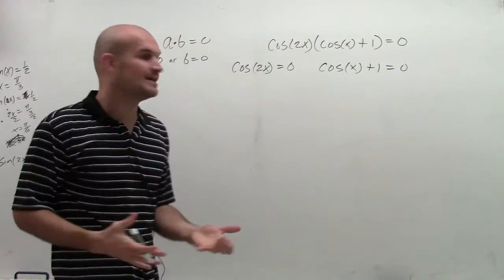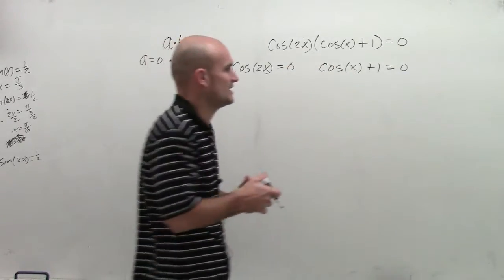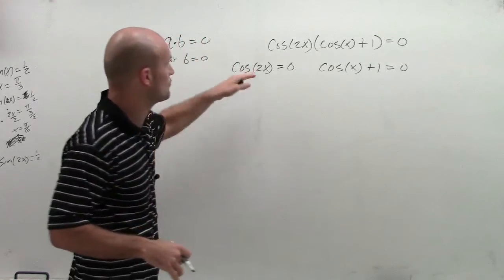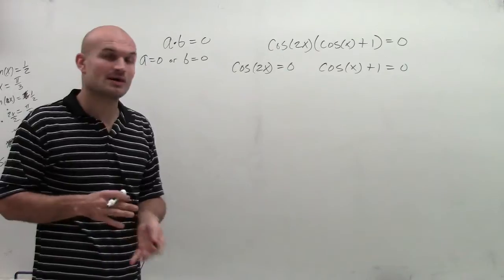So now I can be able to solve each one of these independently. I don't need to worry about trying to combine and then isolate and everything like that. So now I need to determine when is cosine of 2x equal to 0 and when is cosine of x plus 1 equals 0.